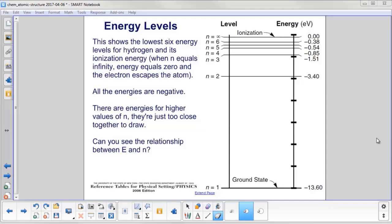The six lowest energy levels for hydrogen are shown here, and its ionization energy up at the top. The ionization energy is where n equals infinity. There's no potential energy left here, and the electron escapes the atom. All of the energies are negative, which means you have a bound system. The electrons stay orbiting the nucleus.